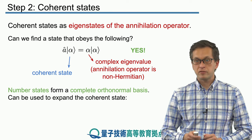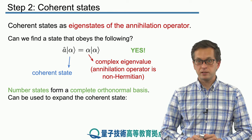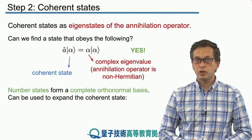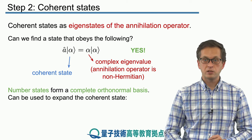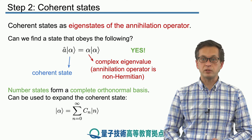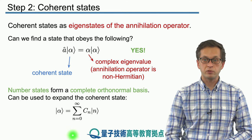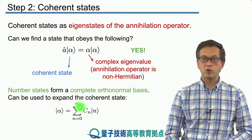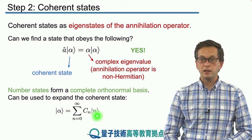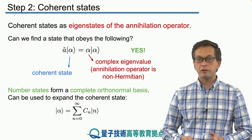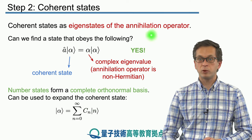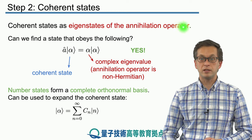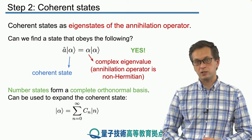So, number states form a complete orthonormal basis. Meaning that we can use them to expand any other state in terms of number states. So we can write our alpha as a simple sum going from n equals to 0 to infinity, of some probability amplitude Cn, and our ket n. Now the question is, what are these Cn's? Such that the following property is obtained. That alpha is an eigenstate of the annihilation operator.